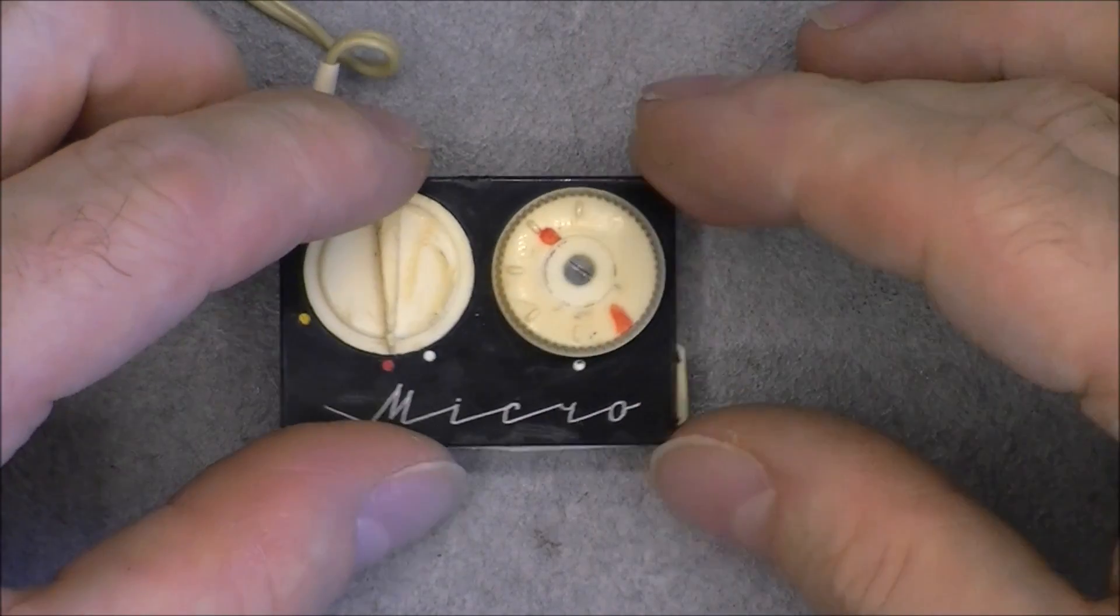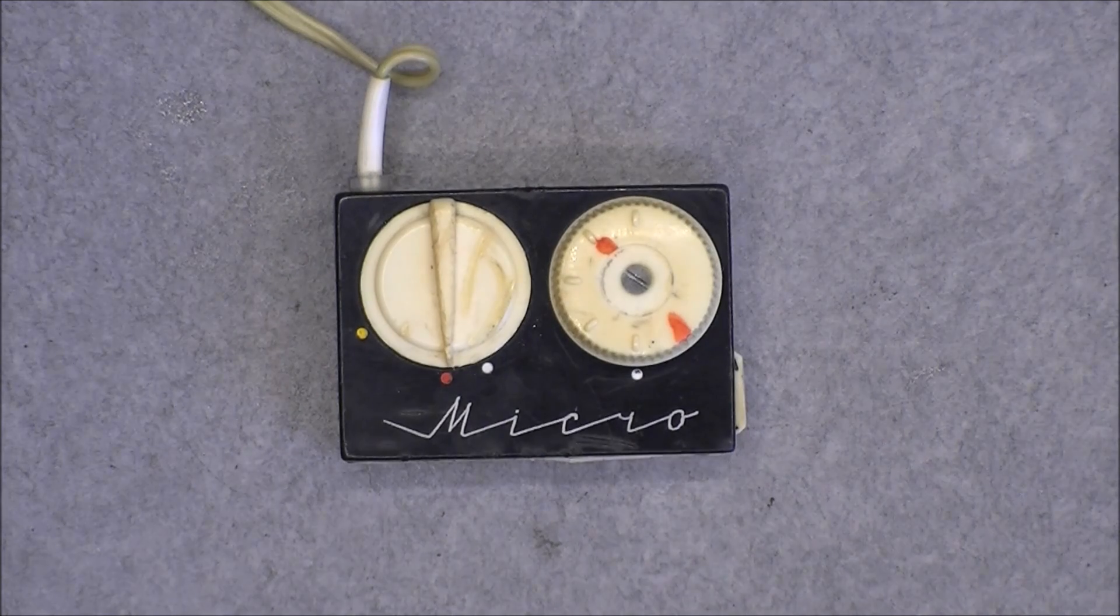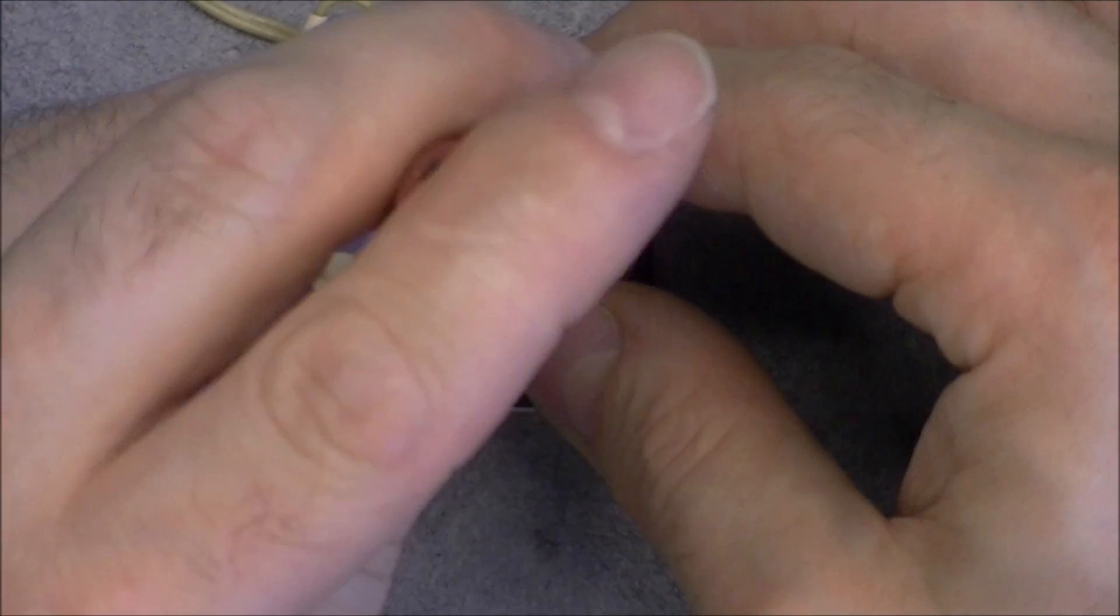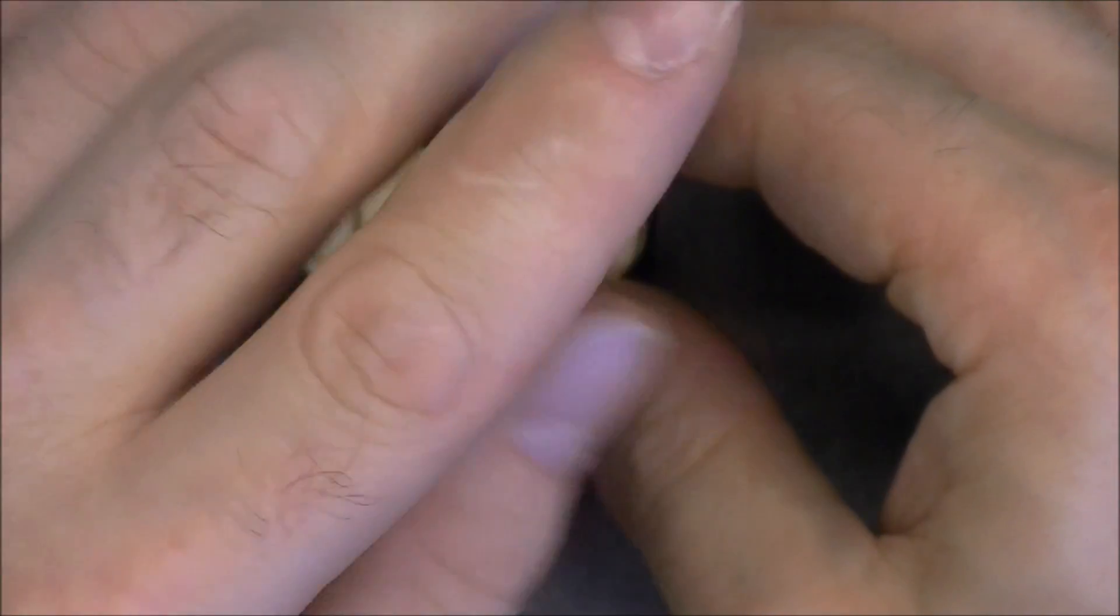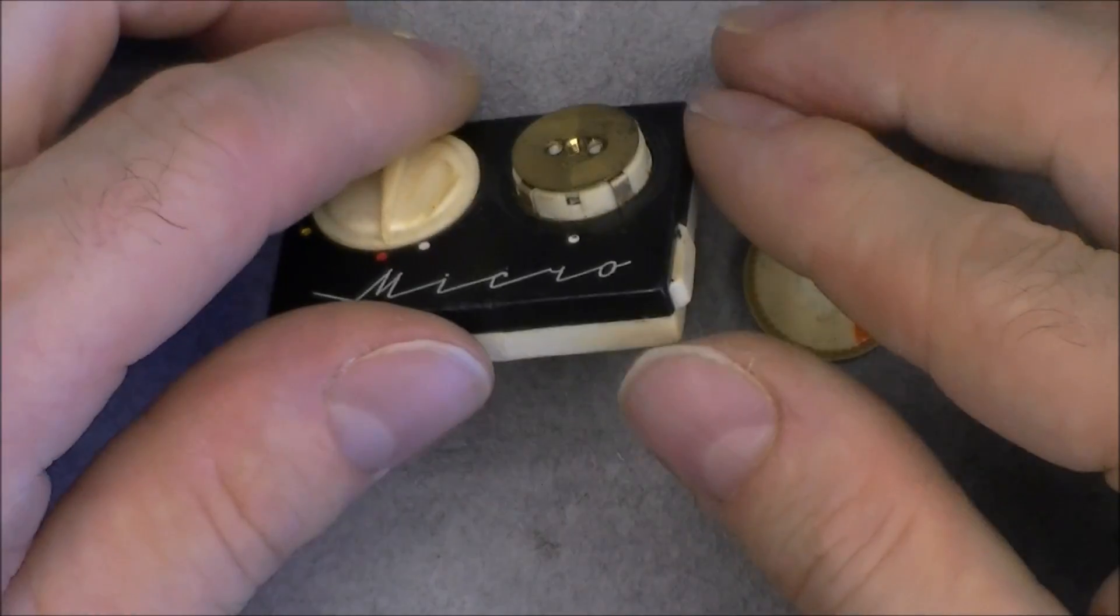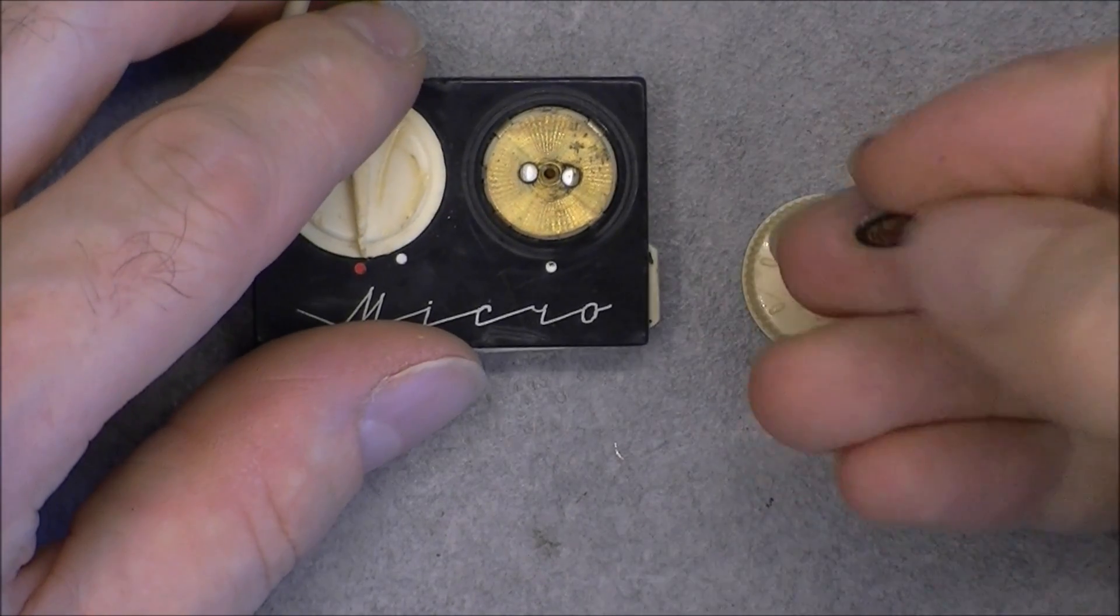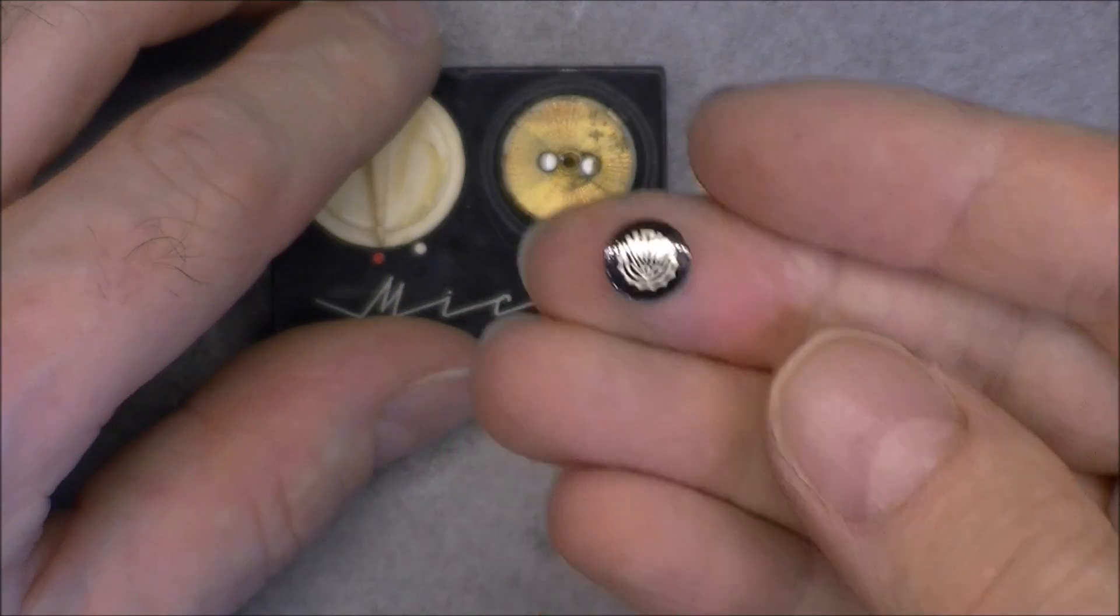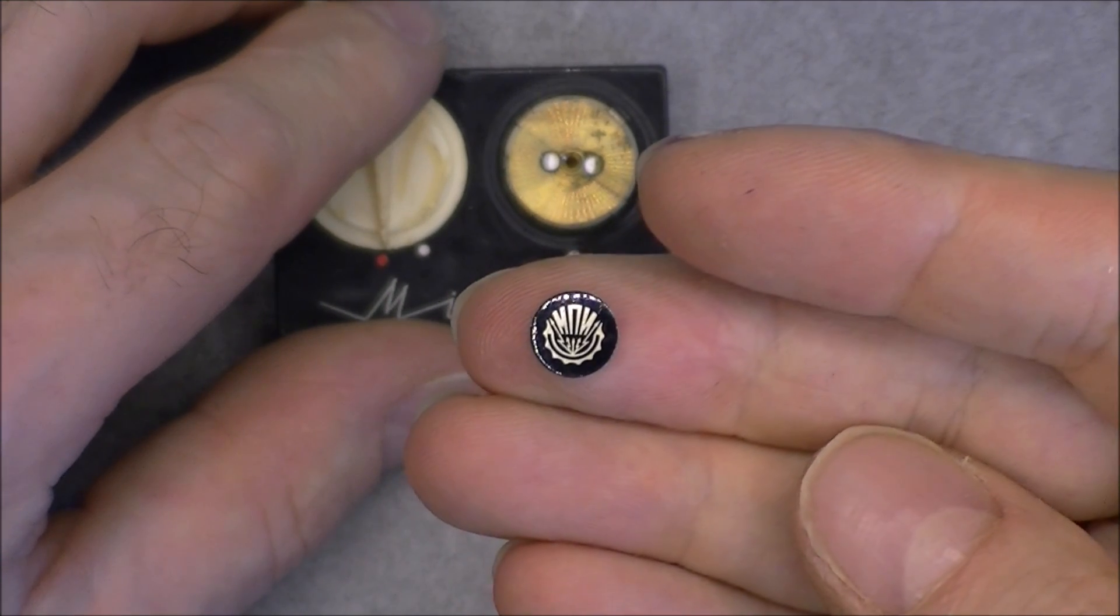And now we will open this. So first, if we remove this screw, we will see the probably adjustable capacitor. Not much to see, in fact. So here on this little cover, you have actually the logo of the Max Pribor Intercompany. I will link the Wikipedia article about it in the video description.